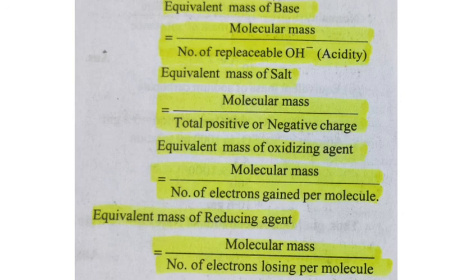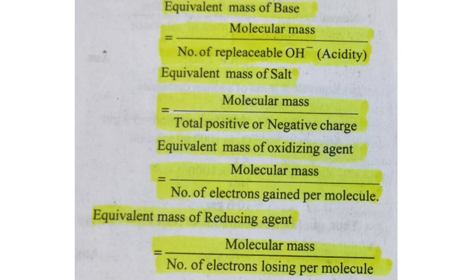Next is the equivalent mass of a salt, which is molecular mass divided by total positive charge — equivalently, the total negative charge. Next, the equivalent mass of an oxidizing agent is equal to molecular mass divided by the number of electrons gained per molecule.